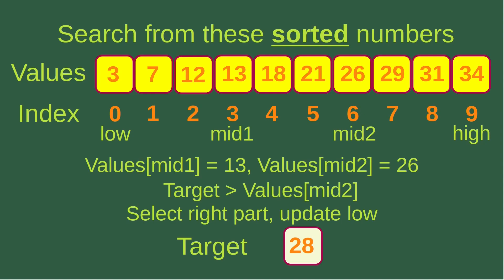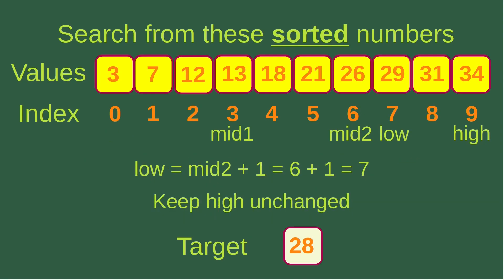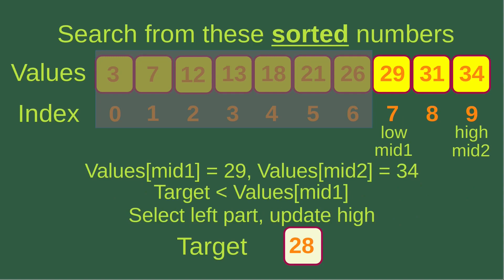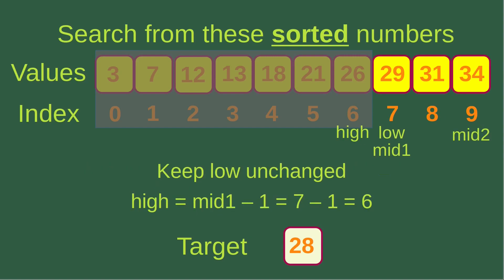We also have to update the low index accordingly. The low index is changed to mid two plus one, which equals seven, and the high index is kept unchanged. After updating, we handle the right-hand part of the entire array. Since low is still smaller than or equal to high, we update mid one and mid two: mid one is seven and mid two is nine. Mid one corresponds to 29 and mid two corresponds to 34. Since the target is smaller than the value at mid one, we select the left-hand part and update the high index. The low index is kept unchanged and the high index becomes mid one minus one, which is seven minus one, so high is now six.